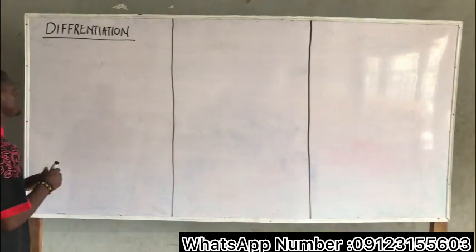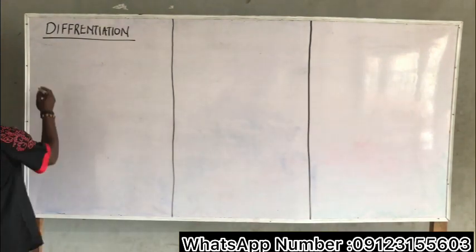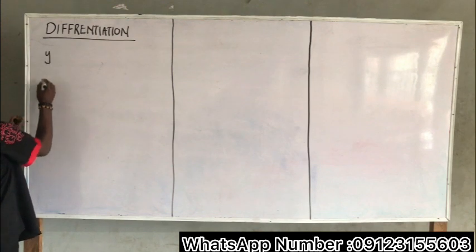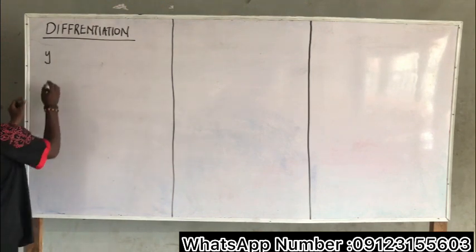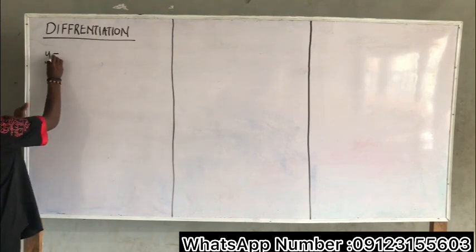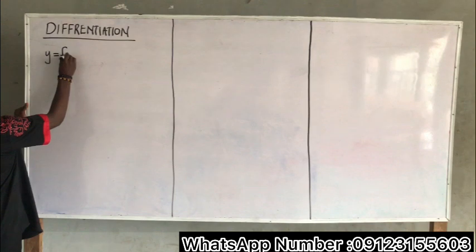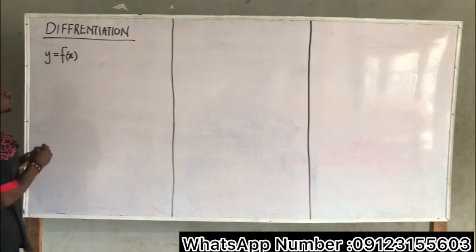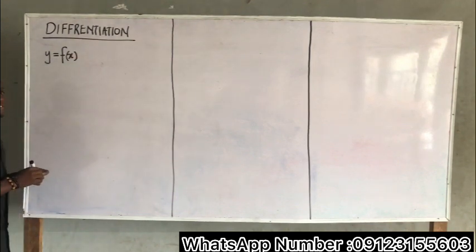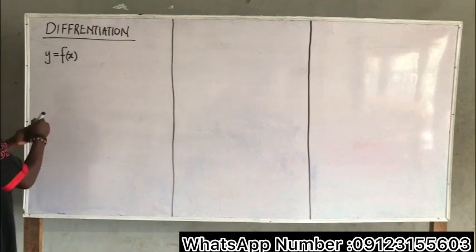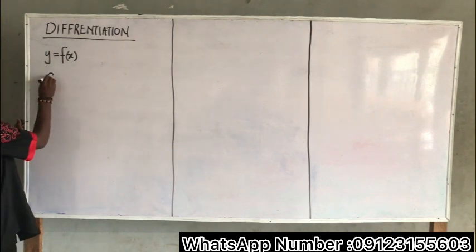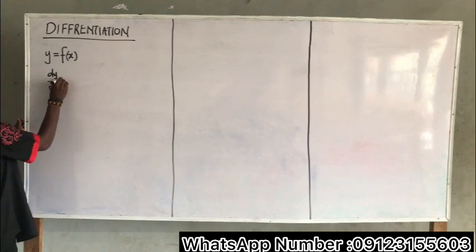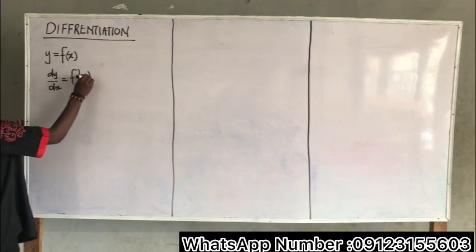For instance, if I'm given a parameter Y expressed as a function of X, f of X, my derivative is the change of Y with respect to X. So dy over dx is now equal to f prime of X.